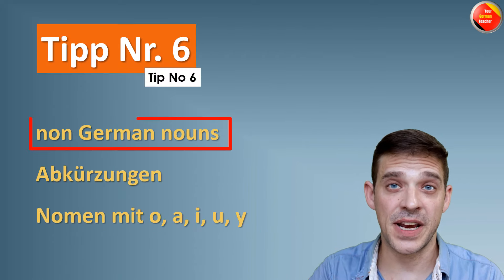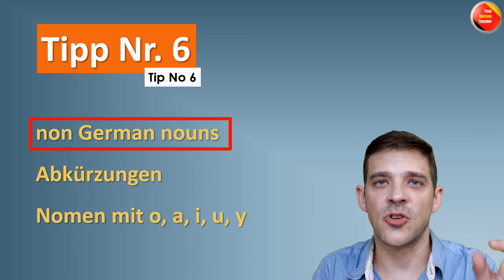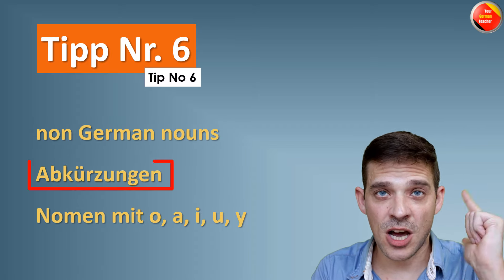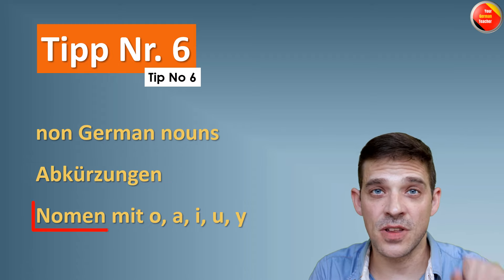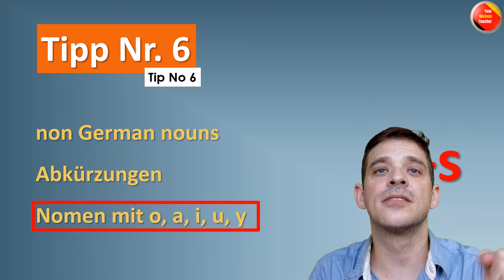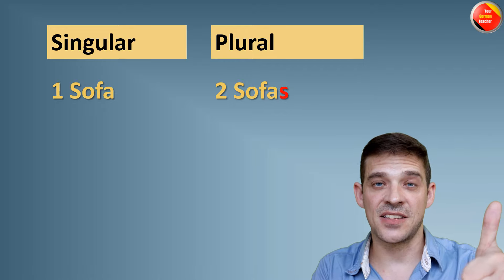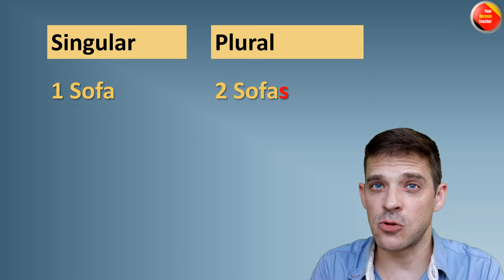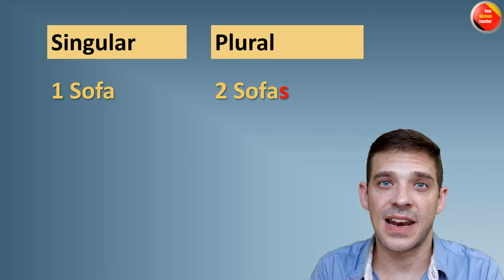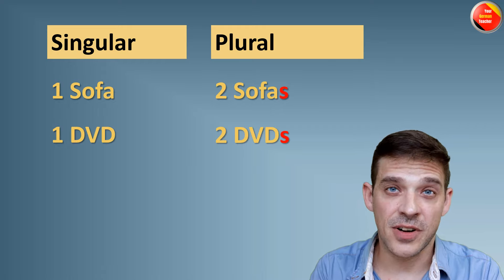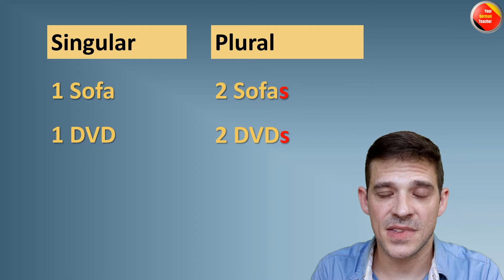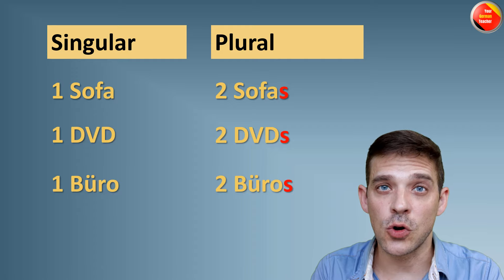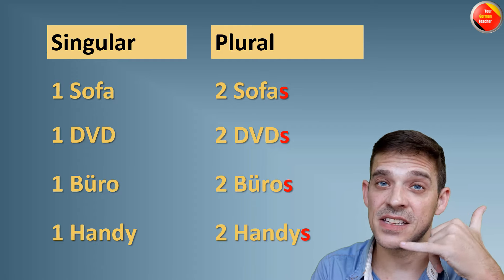Tipp number sechs — non-German nouns, abbreviations (Abkürzungen), and nouns ending with O, A, I, or Y. What do you do? Just add S. Zum Beispiel: ein Sofa → zwei Sofas — this word originally comes from Arabic. Oder eine DVD → zwei DVDs. Oder ein Büro (office) → zwei Büros. Ein Handy (cellphone) → zwei Handys.